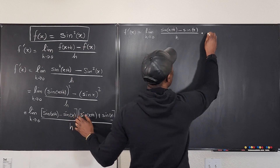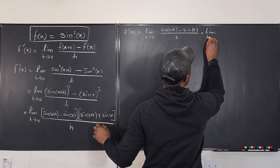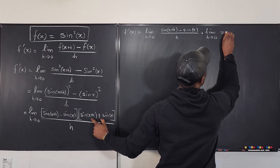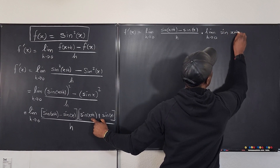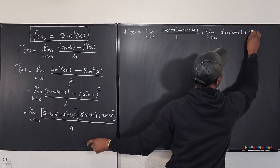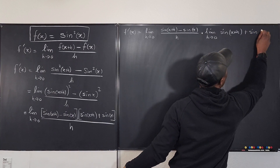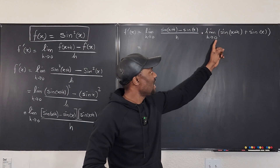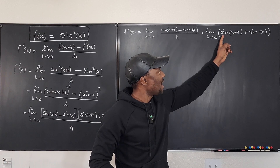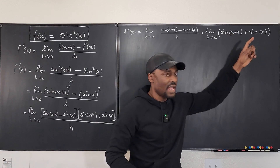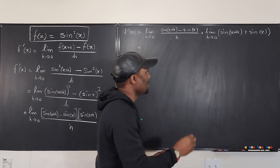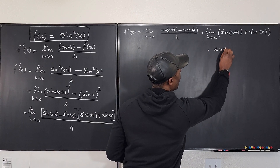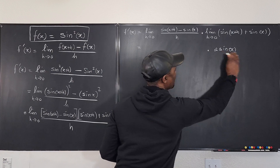So now we're going to say this is the limit as h goes to zero — there's no h here — so we just write sine(x+h) plus sine x. Clearly, if I take this limit, as h goes to zero this becomes sine x plus sine x, which gives two sine x. So I can write the answer here: this is times two sine x.